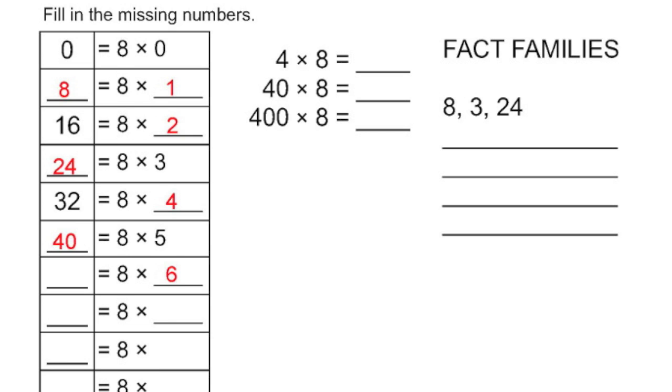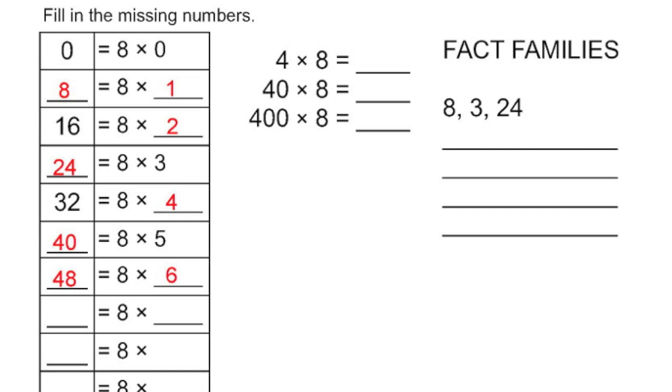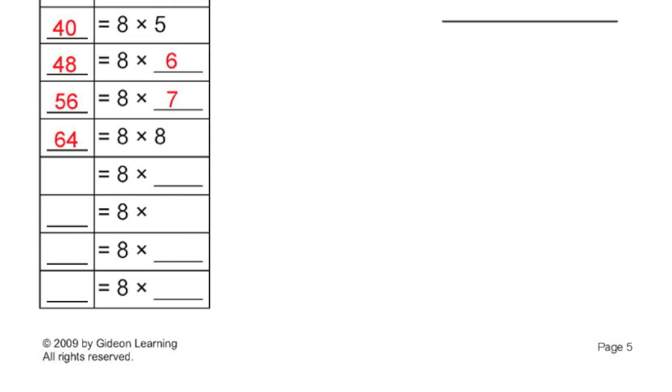8 times 6 is 48. Let's speed it up a little. 8 times 7, 8 times 8, that's going to be 56 and 64, respectively. 8 times 9 is 72. 8 times 10 is 80. And finally, 8 times 11 is 88, and 8 times 12 is 96.